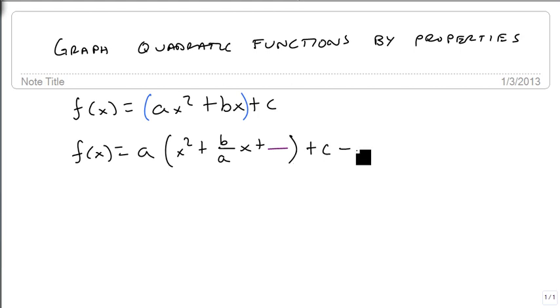We then add c and subtract this a, same a as this one, times whatever that blank is. So that whatever we're adding here, we're subtracting here. Remember, these two get multiplied together to do that.